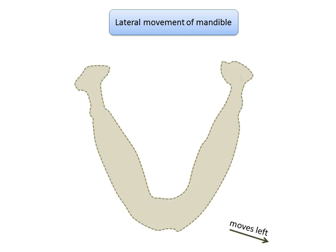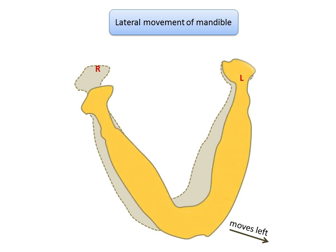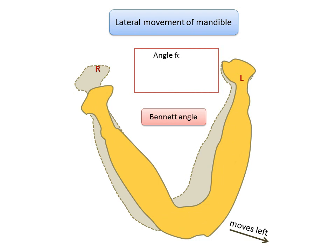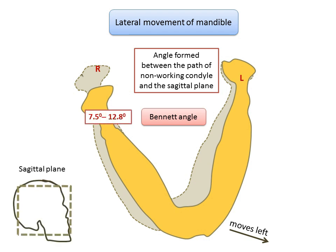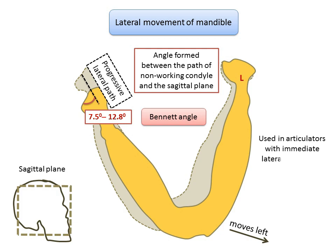Now let's move on to Bennett angle. Bennett angle is the angle formed by the sagittal plane and the path of the advancing condyle during lateral mandibular movements, as viewed in the horizontal plane — specifically between the progressive lateral path of the non-working condyle and the sagittal plane. Studies show the Bennett angle ranges from 7.5 to 12.8 degrees. It is used in articulators with immediate lateral translation capability, such as the Hanau articulator. In the image, the black line indicates the progressive lateral path and the gray dotted line is the sagittal plane.